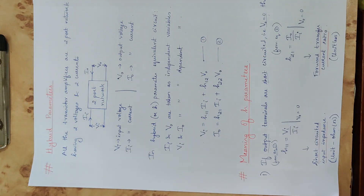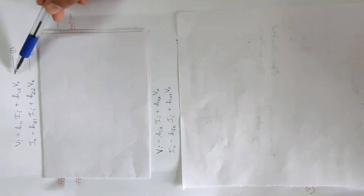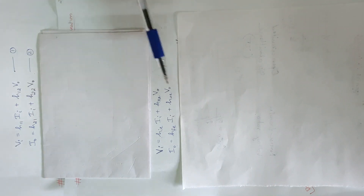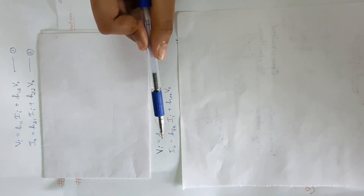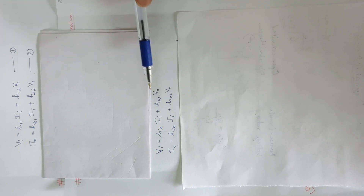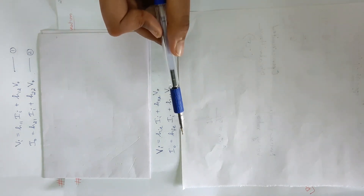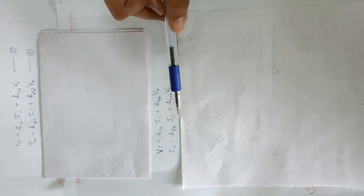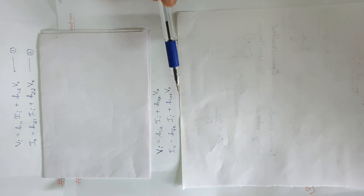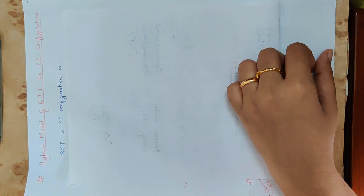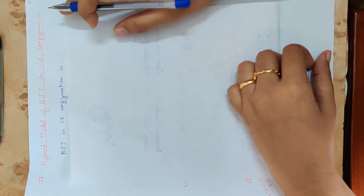Now we have a basic equation. We have to finish this unit. We have to replace these two equations: H11 is HIE. We have to replace these four H-parameters. That is: Vi equal to HIE into Ii. This is for BJT in common emitter configuration.